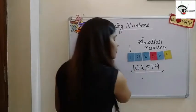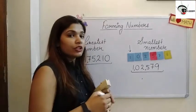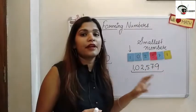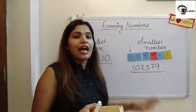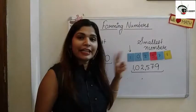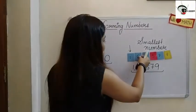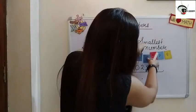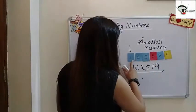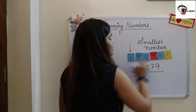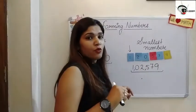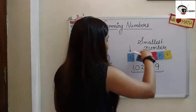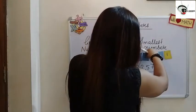That is one lakh two thousand five hundred and seventy-nine. Always keep in mind: when forming the smallest number and zero is one of the digits, zero comes at the second place. If zero were placed at the third position, the number would be one lakh twenty thousand five hundred and seventy-nine, which is not the smallest.